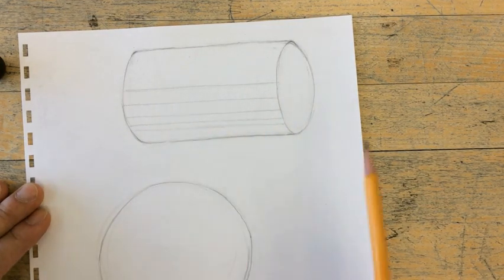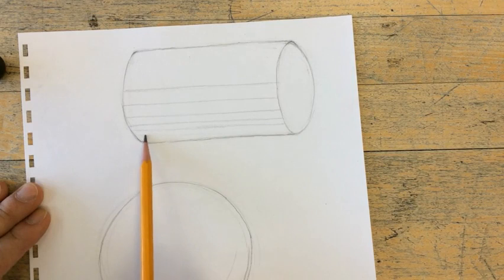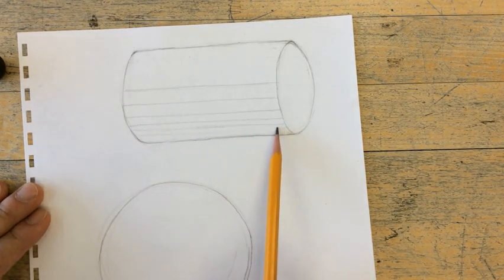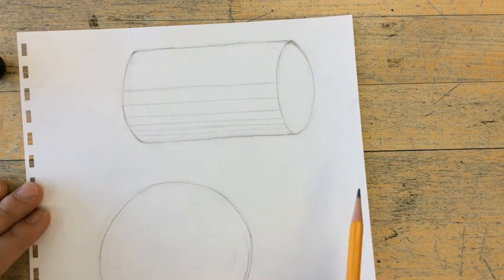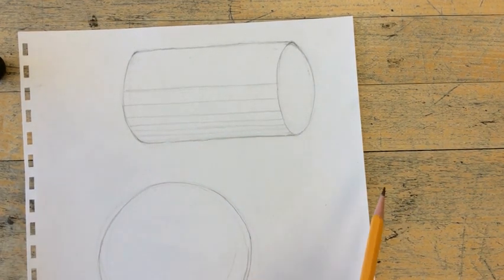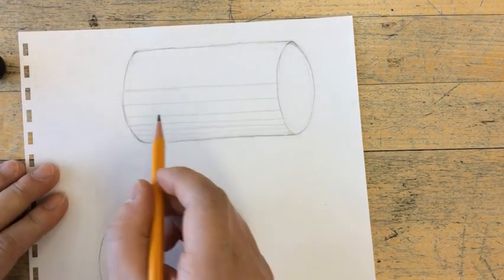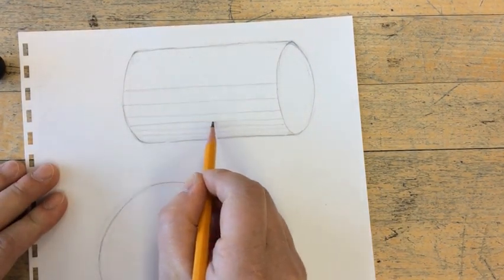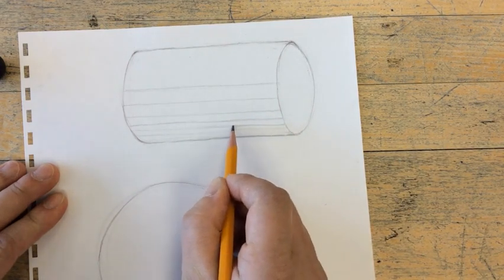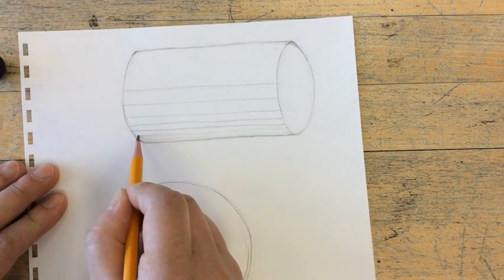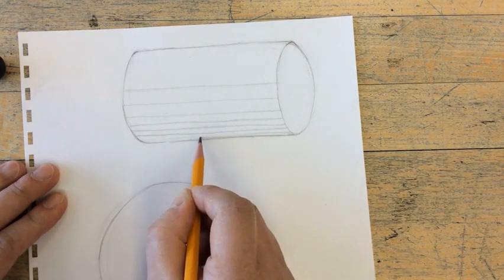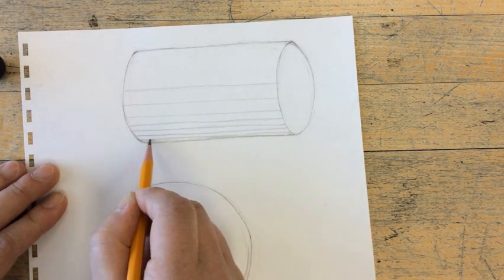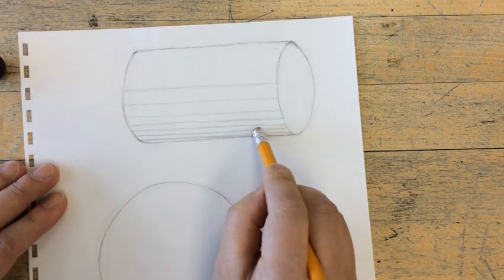As you see in my demo here, my vertical lines on my cylinders, as they move away from the center of the cylinder, they start to get tighter. Now you're wondering, why are they getting tighter? It's because the cylinder is round, so as it wraps around to the other side, these lines are going to get pinched. They're moving away from you. Hopefully that makes sense.